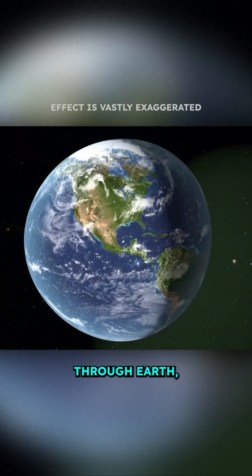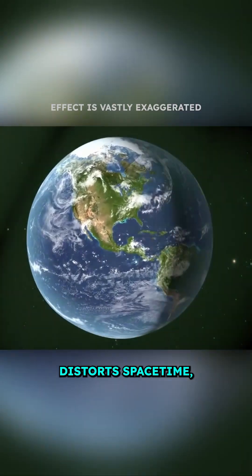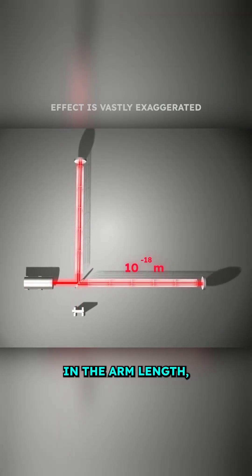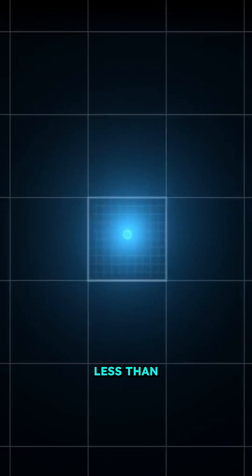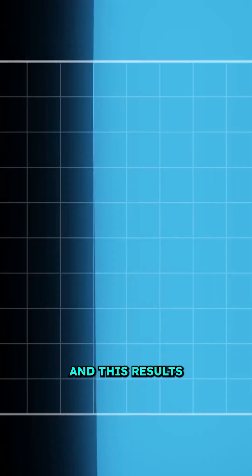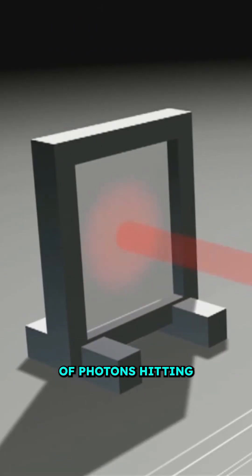When a gravitational wave passes through Earth, it actually slightly distorts spacetime, causing a very minute change in the arm length, similar to measuring a distance less than a fraction of an atom. This results in a minuscule change in the number of photons hitting LIGO's extremely sensitive detector.